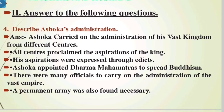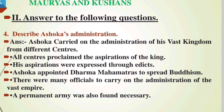Fourth question: Describe Ashoka's administration. Ashoka carried on the administration of his vast kingdom from different centers. All centers proclaimed the aspirations of the king, which were expressed through edicts. Ashoka appointed Dharma Mahamatras to spread Buddhism. There were many officials to carry on the administration of the vast empire, and a permanent army was also found necessary.